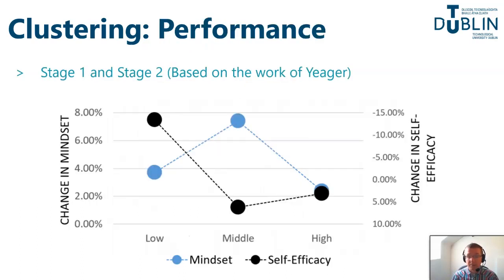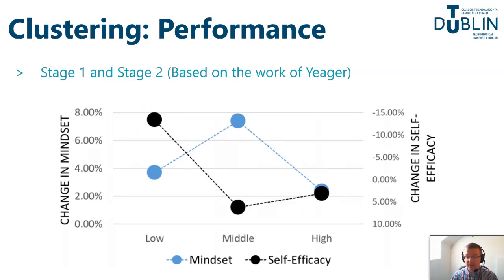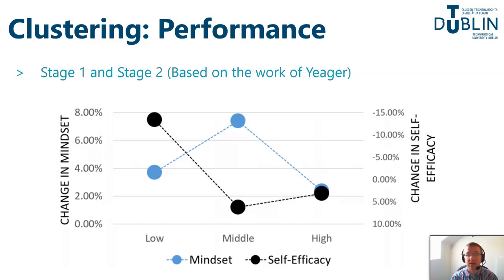Secondly, we clustered by performance and also measured mindset and programming self-efficacy. The programming self-efficacy scale is inverted due to the data reduction technique applied. What we see is that low-performing students show the most change in mindset and programming self-efficacy, whereas high-performing or middle-performing students see a reduction in self-efficacy, and middle-performing students see the largest increase in mindset. These insights need further investigation, but again show that not all student cohorts may experience the intervention in the same way.